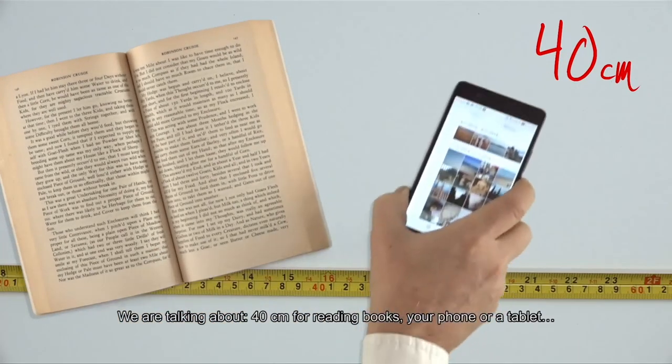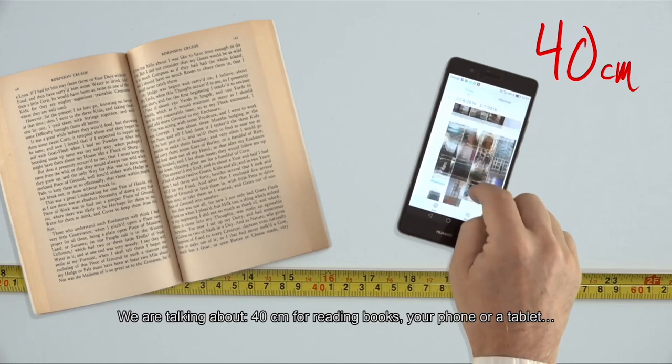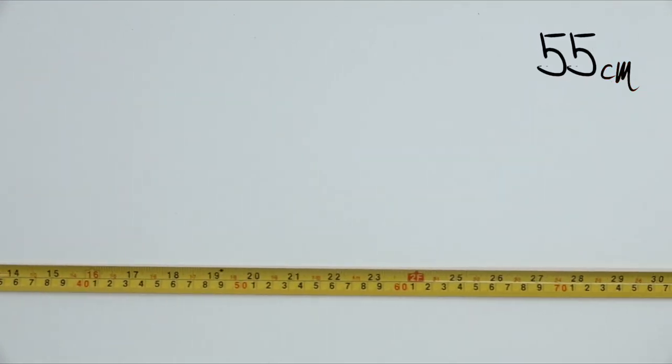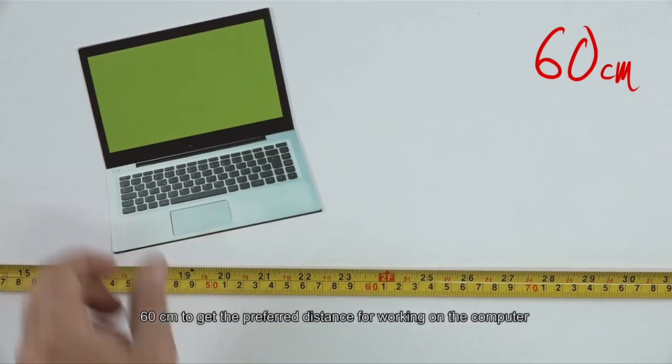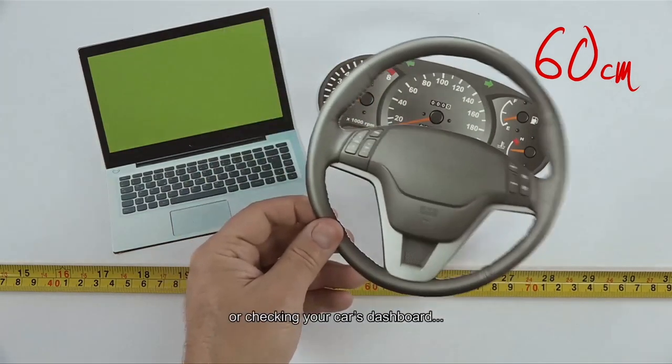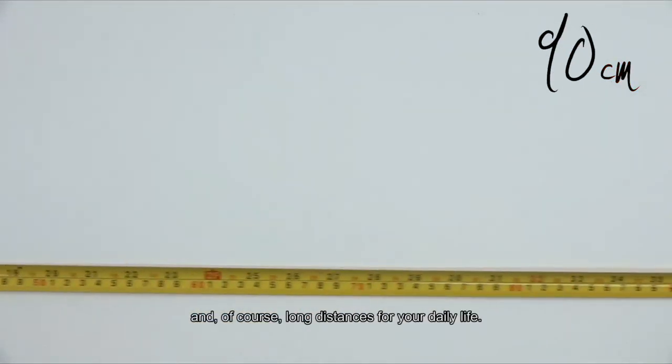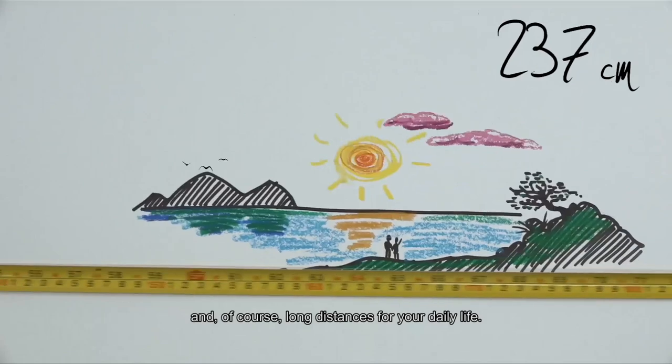We're talking about 40cm for reading books, your phone or a tablet, 60cm to get the preferred distance for working on the computer or checking your car's dashboard, and of course, long distances for your daily life.